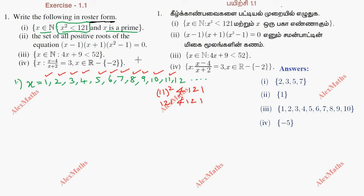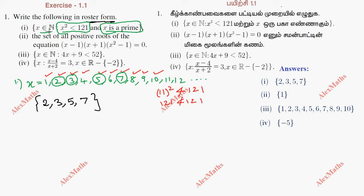So we have to look at the numbers satisfying all three conditions: first it is a natural number, second x squared less than 121, and third x is a prime. The elements of the set are 2, 3, 5, 7.